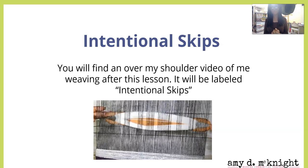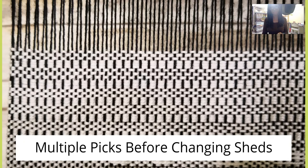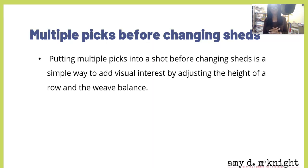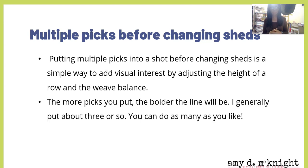Next up we have multiple picks before changing sheds. Putting multiple picks into a shot before changing sheds is a simple way to add visual interest by adjusting the height of the row and the weave balance. The more picks you put in, the bolder the line will be. I generally like to do about three or so — you can do as many as you like. I like odd numbers.